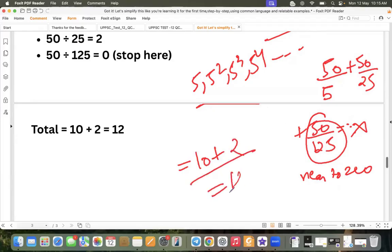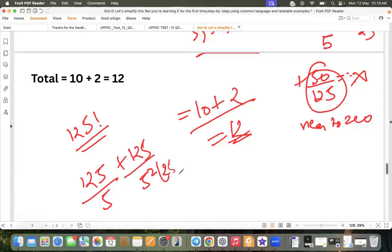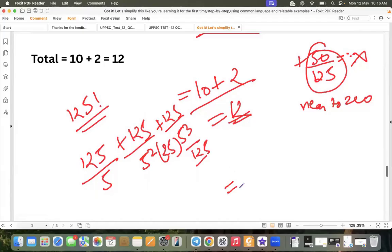This is a very very quick method. This is 125 divided by 5 square, that is 25, that is 125 itself. So here we would have got what? 5.